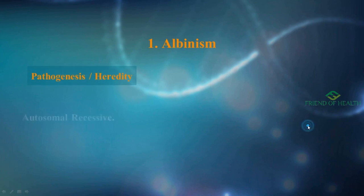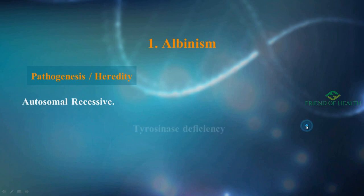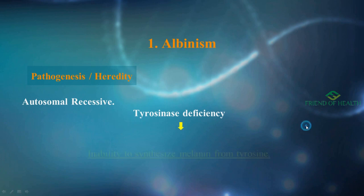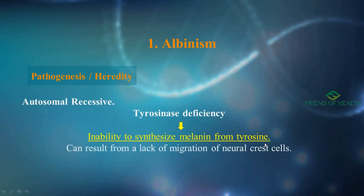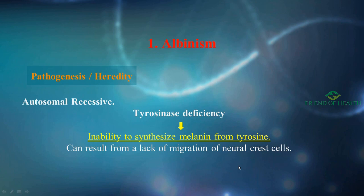The first disease is albinism. It is an autosomal recessive disease. What happens here is tyrosinase deficiency, which leads to inability to synthesize melanin from tyrosine. This can also result from a lack of migration of neural crest cells. Albinism is very important — you have to know the pathogenesis thoroughly.